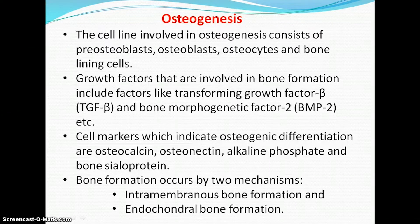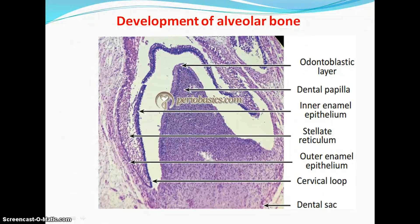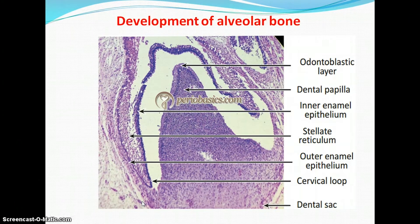Details of these two types of bone formation can be found in dental histology books. Regarding the development of alveolar bone, cells derived from the dental sac differentiate into osteoblasts and form the alveolar bone. The formation of alveolar bone takes place alongside the eruption of the teeth.